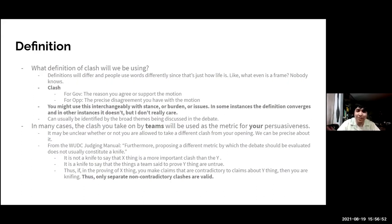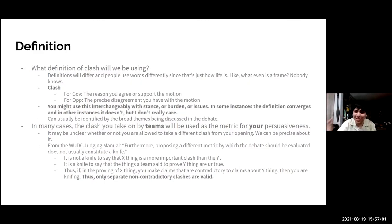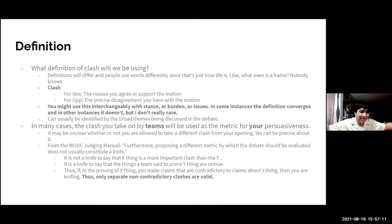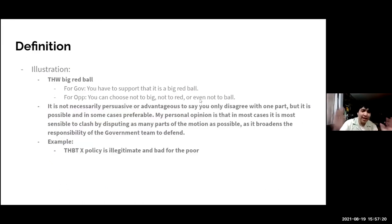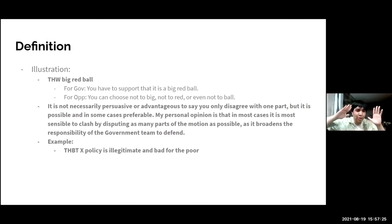In the proving of X thing, if you make claims contradictory to claims about Y thing, then you are knifing. If you're making a separate non-contradictory clash, it's valid. This matters for debaters thinking about extensions and for judges: if a team says something is most important, that doesn't count as a contradiction if closing says something else is more important. At some point closing government does have to contradict opening government.